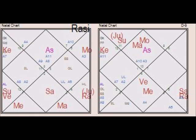You can determine profession based on the Karakamsa — that is, where the Atmakaraka is placed in the Navamsa chart. Like I said in my earlier video, I discussed how Sage Jaimini explained the role the Atmakaraka plays in the Navamsa chart to determine a person's profession. Today, specifically from that discussion, we focus on the influence of Rahu on the Atmakaraka in the D9 chart or Navamsa chart.